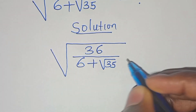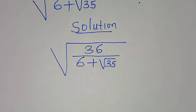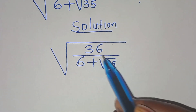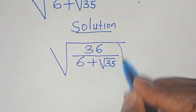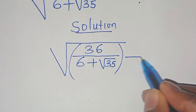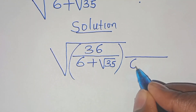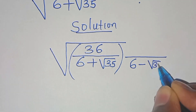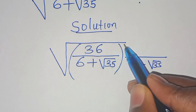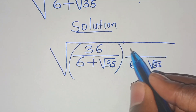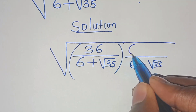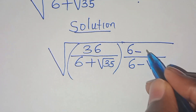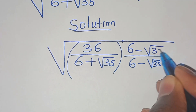The first thing to do here is to introduce a conjugate — that is, to rationalize the denominator. So here we have a conjugate of 6 minus square root of 35. We also multiply this conjugate with the numerator, so we have 6 minus square root of 35.